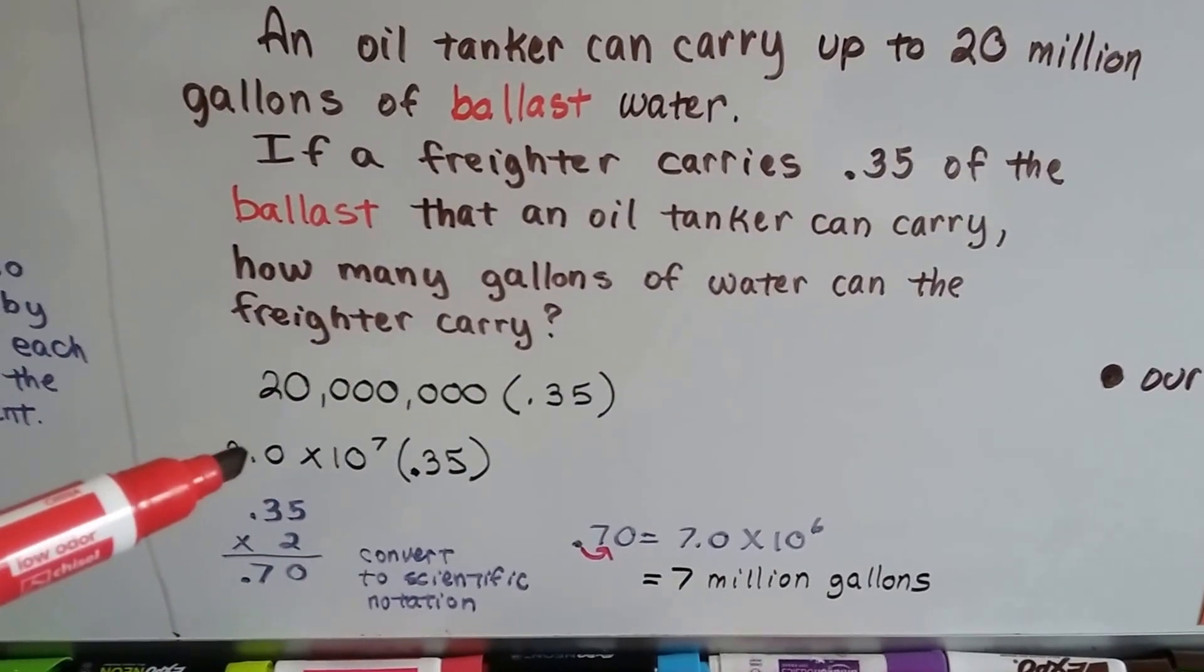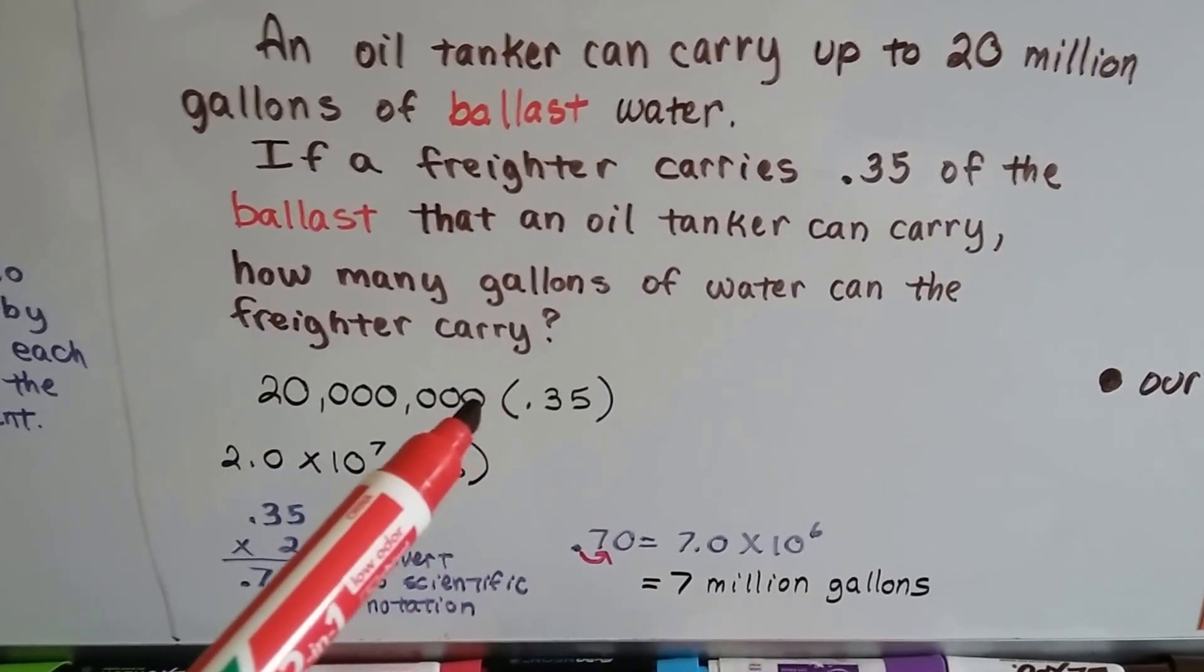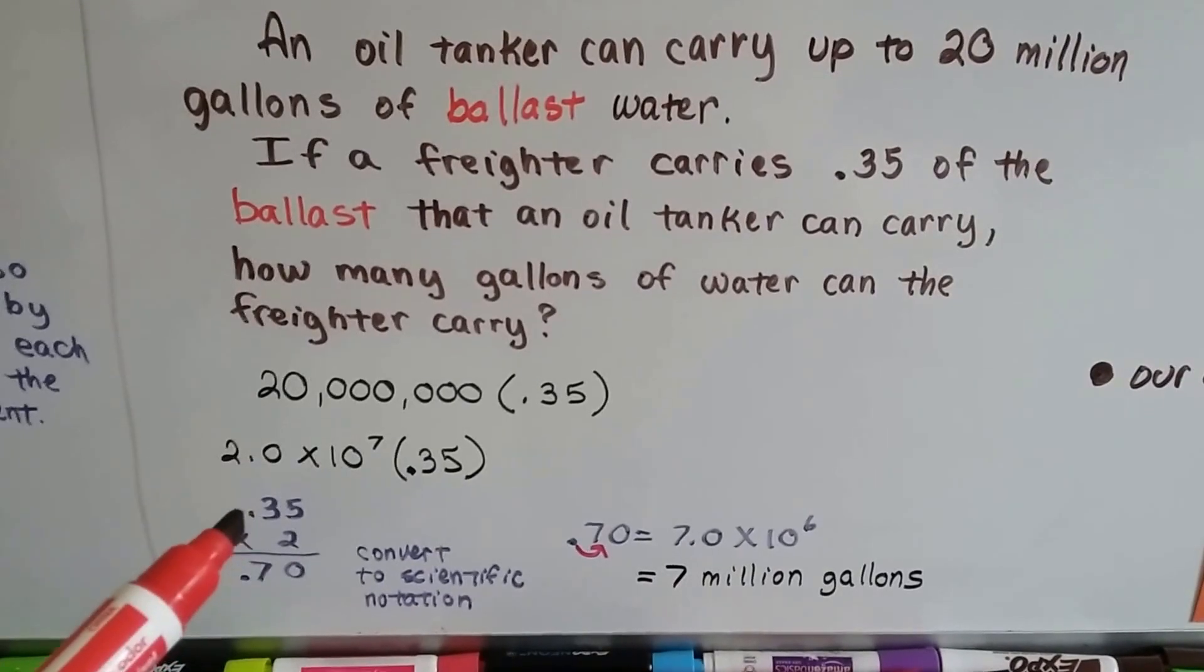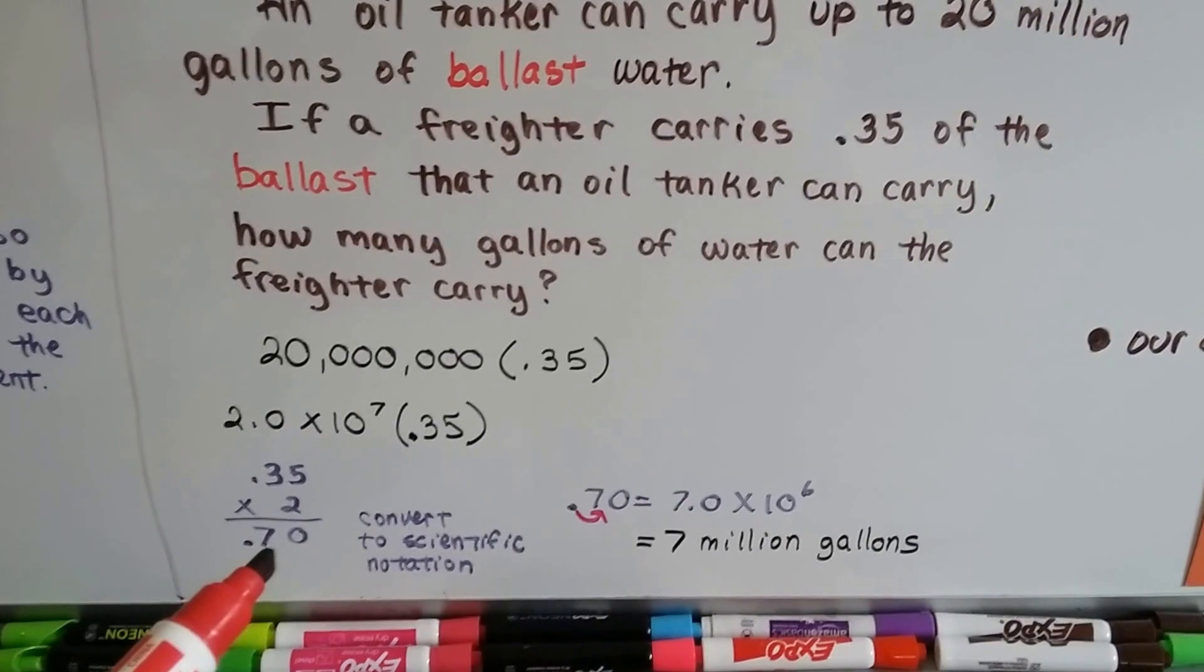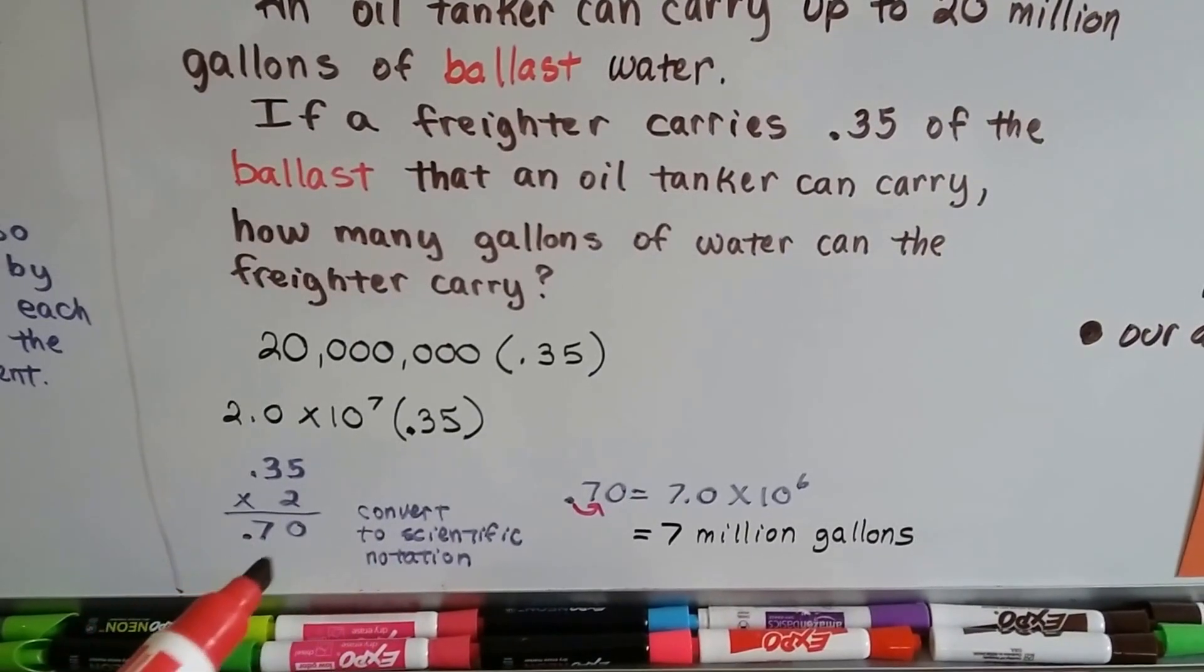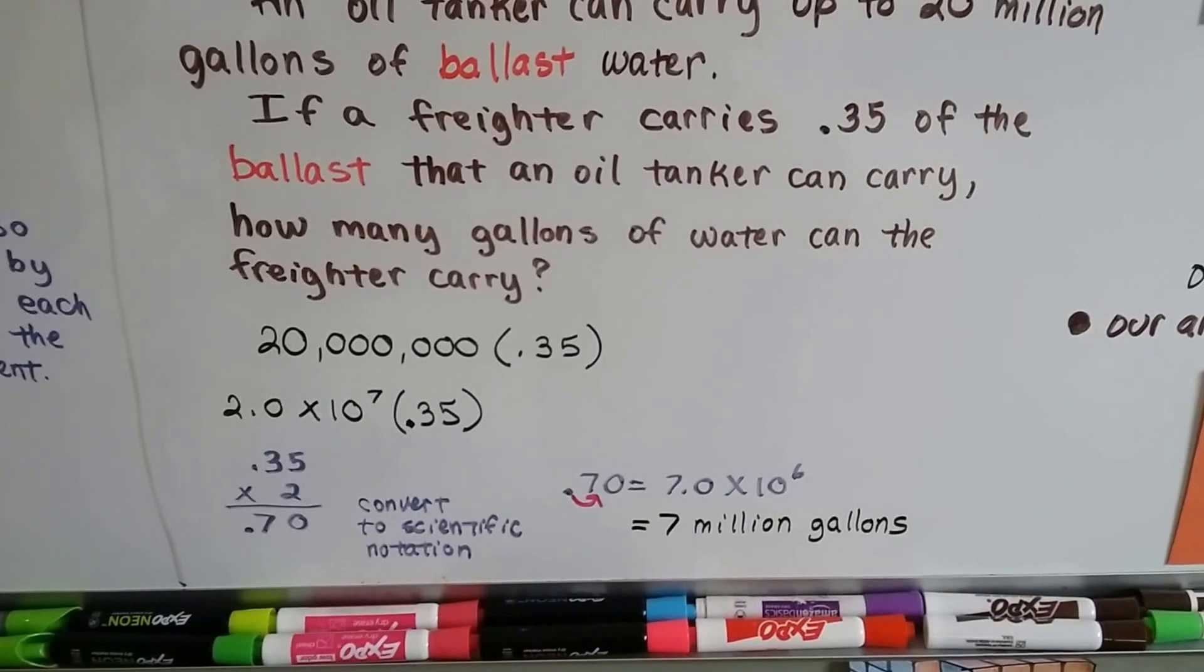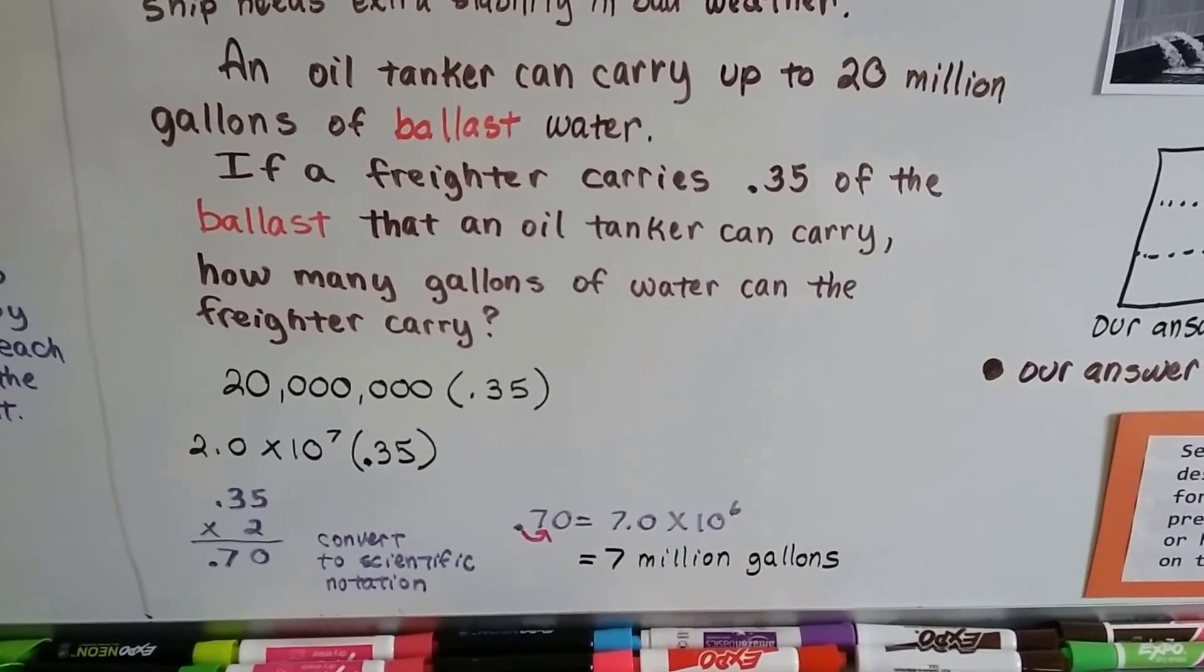Well, we can do 2.0 times 10 to the seventh power. We move the decimal point seven spaces right behind the two. And we can multiply the 0.35 times two and get 0.70. If we convert that to scientific notation, we have to put the decimal point behind the seven. So, that's going to take away one of these exponents. So, we're going to have 7 times 10 to the sixth power. And if we write this in standard notation, we'll see that it's 7 million gallons.